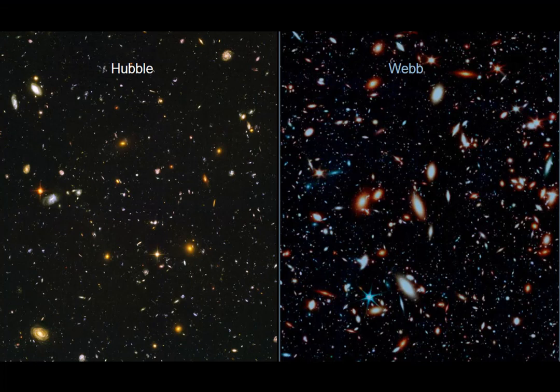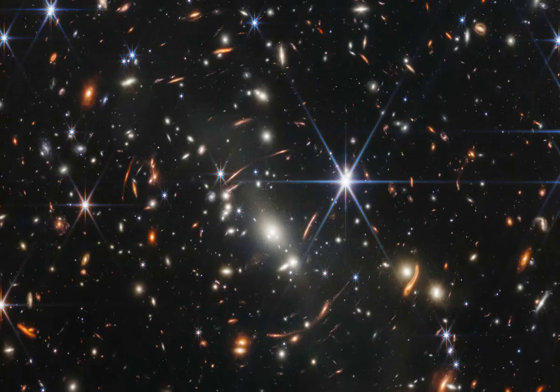We're looking at galaxies here that are within about half a billion years of the beginning of the universe since the Big Bang, which is much farther back than we've been able to examine before. And we're also getting spectra from them — splitting the light into its components, and it's telling us what these galaxies were made of.